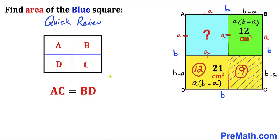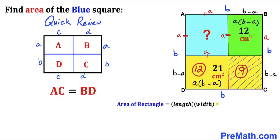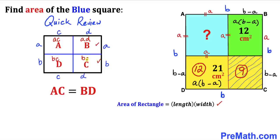You might be wondering how this could be possible — let me give you a quick explanation. Let me call this side 'a' and this side 'b', this side 'c' and this side 'd'. Then these side lengths are going to be a, b and c and d. Recalling the area of a rectangle formula — length times width — the area for this rectangle is a times c, for this one is b times c, for this one is a times d, and finally for this one is b times d.